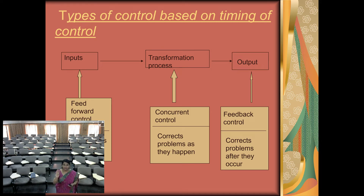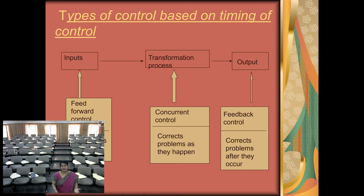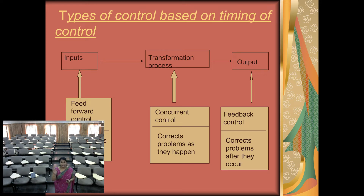Based on timing of control, three types of controlling exist. If you see the system process, three steps are there: input, process, and output. Input — what work you are doing; process — how you are doing it; output — what result you have got. You can do controlling at all three times. Controlling at input is feed forward control; controlling during the transformation process, when the work is happening, is concurrent control; and the third one is feedback control.